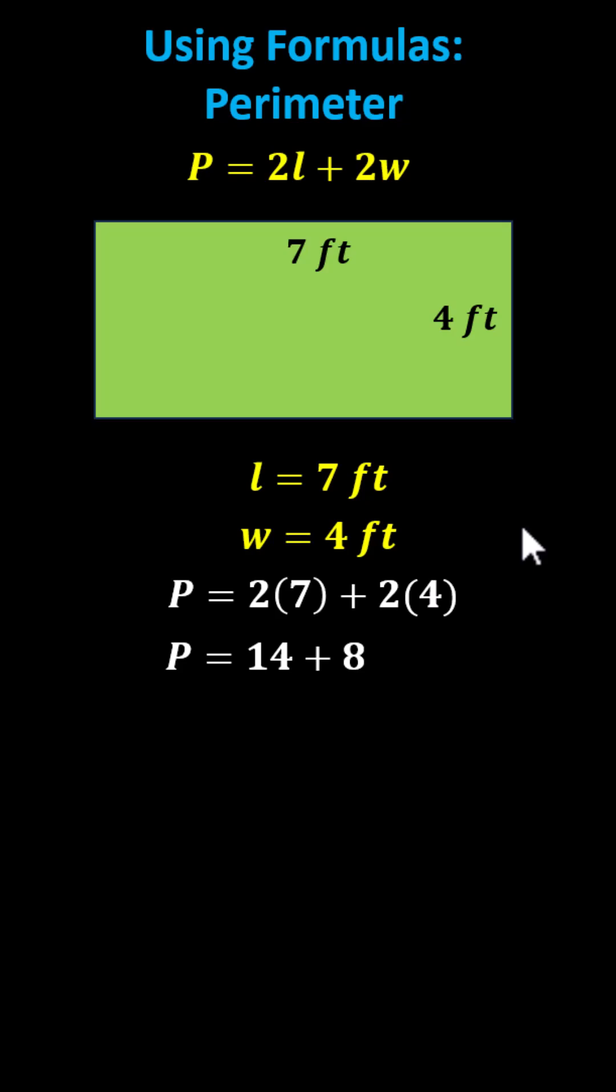Because the perimeter is a distance, we know the units would be feet. The perimeter is equal to 22 feet.